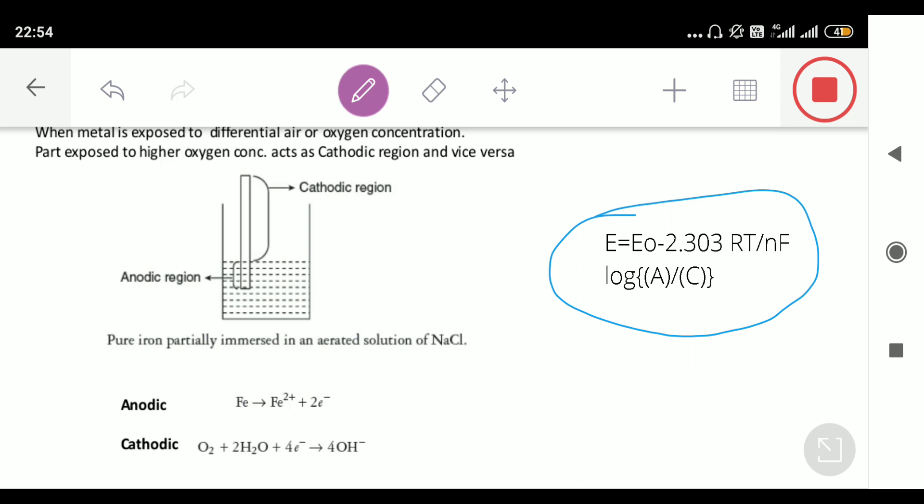If E0 is 0, then we have E equals minus 2.303 RT upon nF log A upon C. So this EMF is going to be positive only when cathodic concentration is greater than anodic.